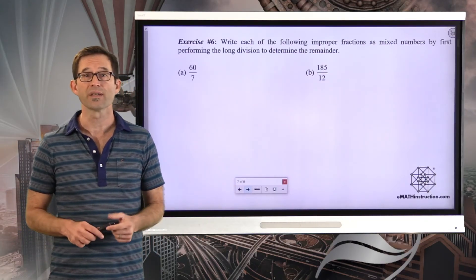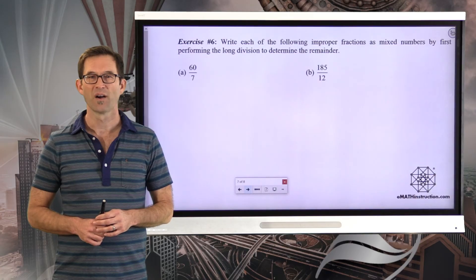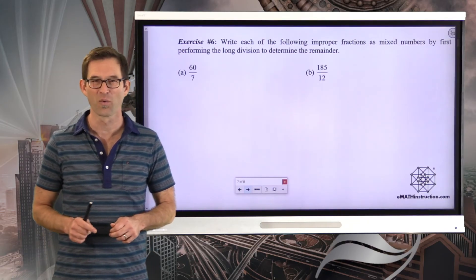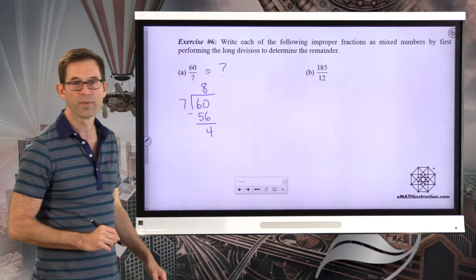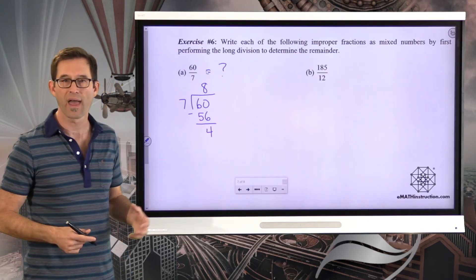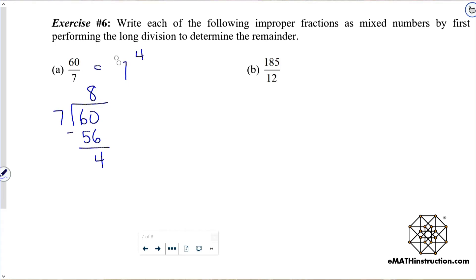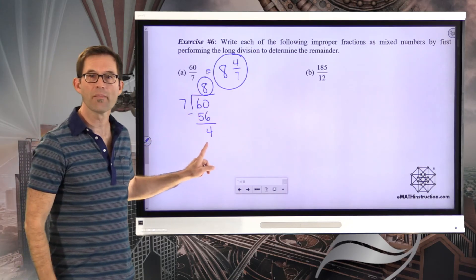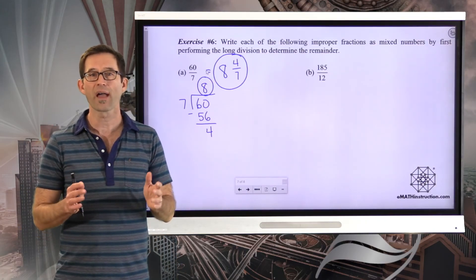Let's get a little more practice on this in the next and final exercise, exercise number 6. Write each of the following improper fractions as mixed numbers by first performing the long division to determine the remainder. So 60 sevenths. I want to know what this is equal to in terms of a mixed number. So I'm going to divide 60 by 7. 60 divided by 7, the closest I can get is 8. And 8 times 7 is 56. When I subtract, I end up having 4 left over. That remainder then gives me that unit fraction that hangs on. In other words, 60 sevenths is going to be equal to 8 and 4 sevenths. So my quotient of 8 plus a remainder of 4 sevenths. Why don't you give it a shot with 185 twelfths? Pause the video now and see what that converts into in terms of a mixed number.